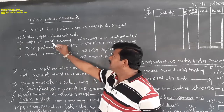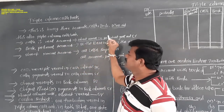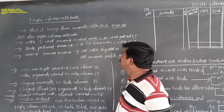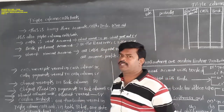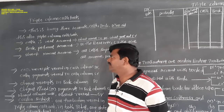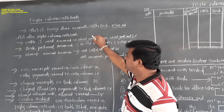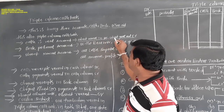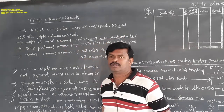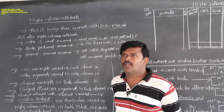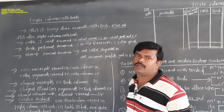Cash is the real account. What comes in, debit; what goes out, credit. When cash comes into business, it will be debited. When cash is going outside, it will be credited as per the real account. When you are preparing the cash column, we must remember the real account principle.